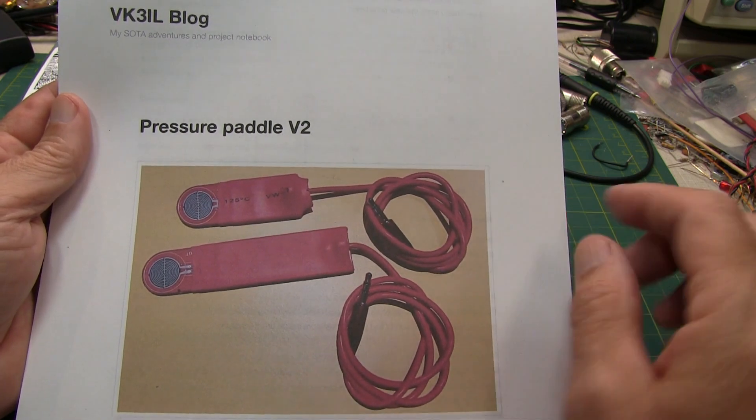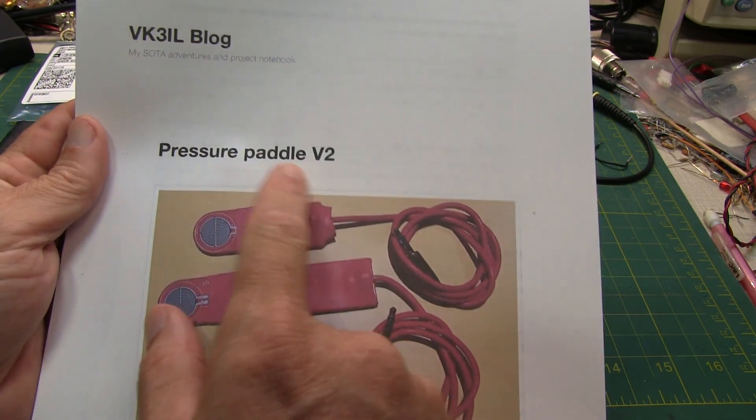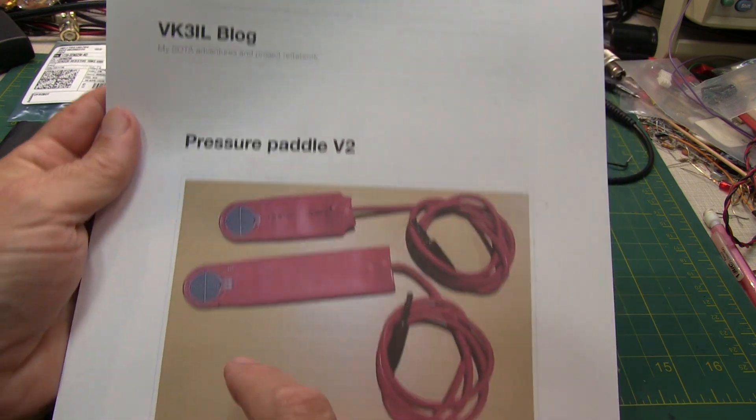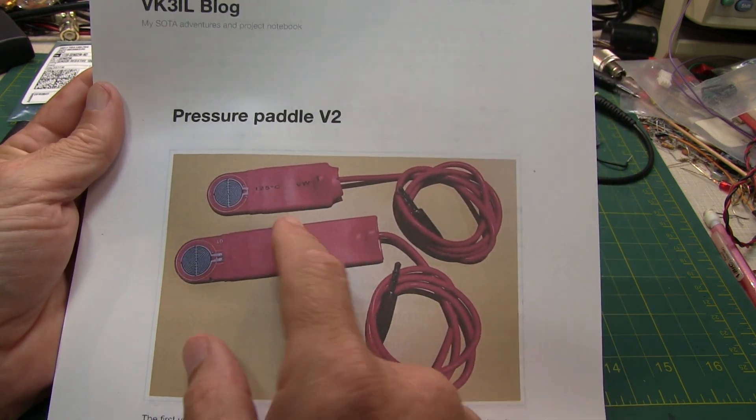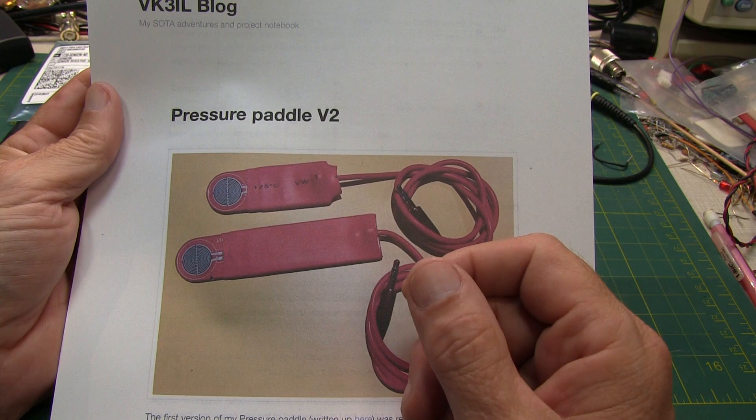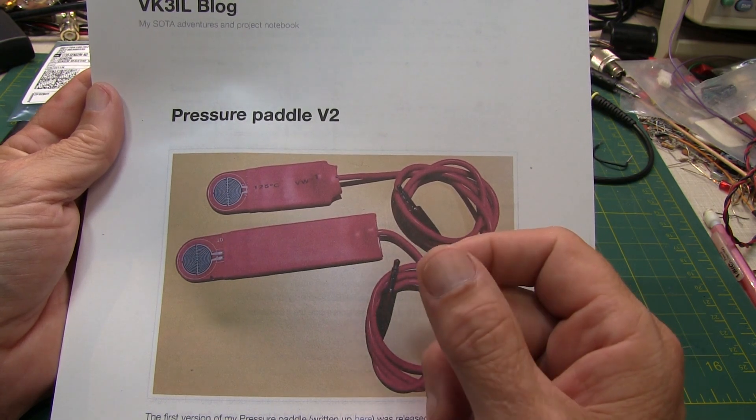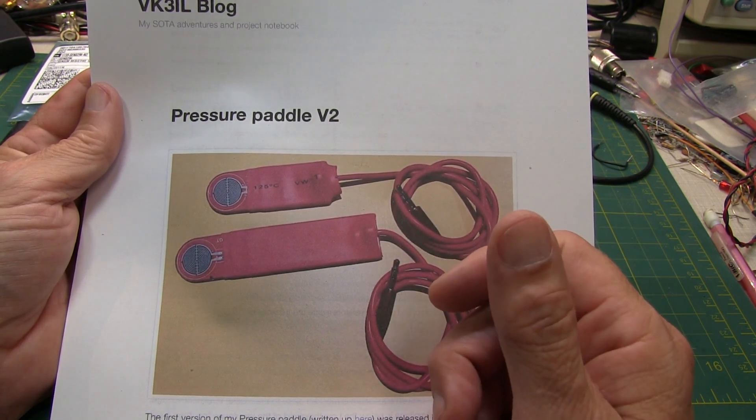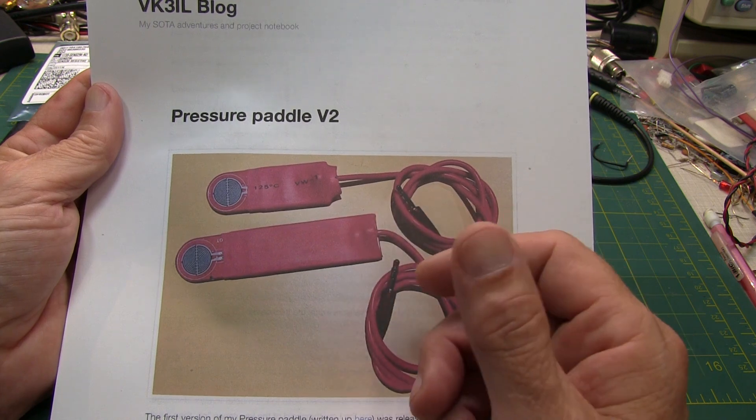In today's video, we're going to take a look at this pressure paddle from VK2-IL. The pressure paddle is essentially a Morse code iambic paddle to be used with amateur radio and a built-in electronic keyer in the radio that uses no moving parts.